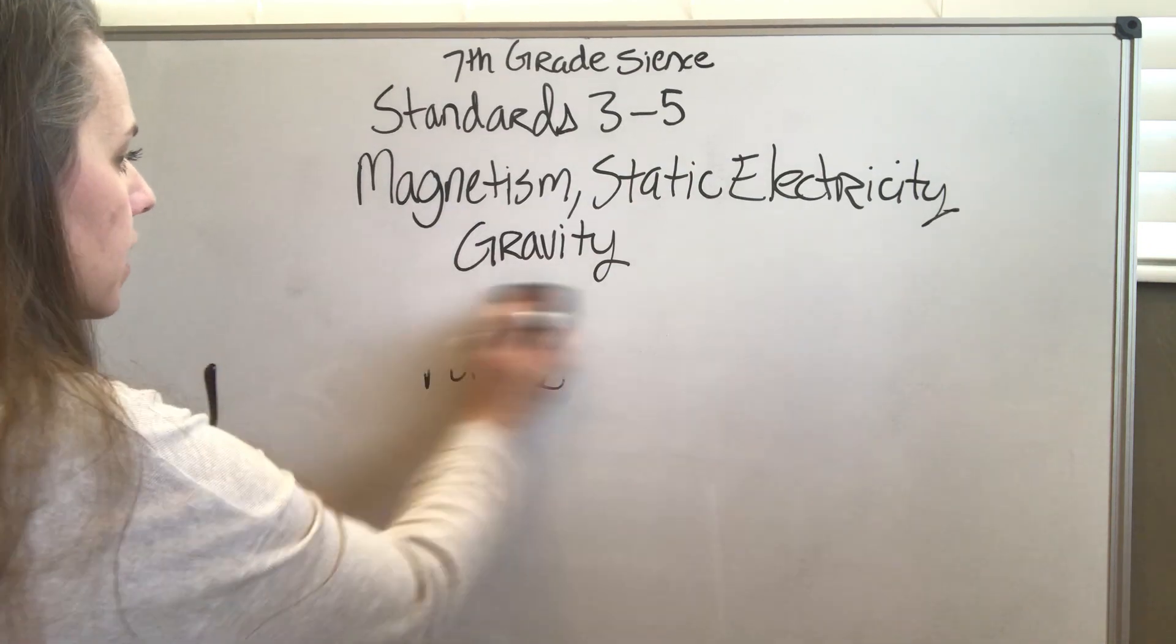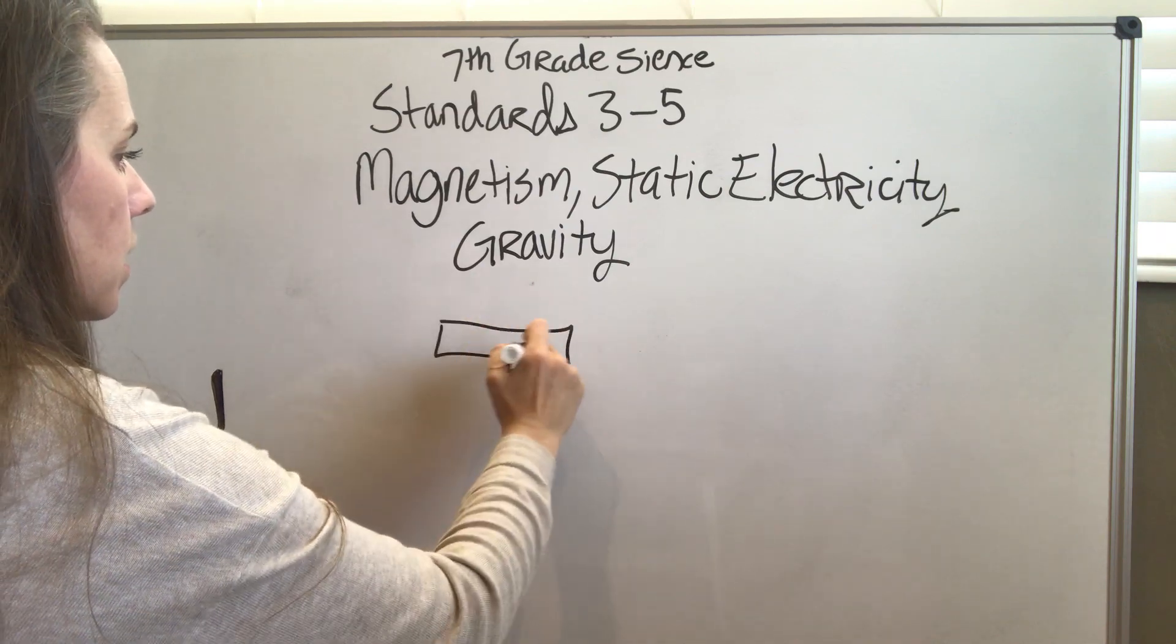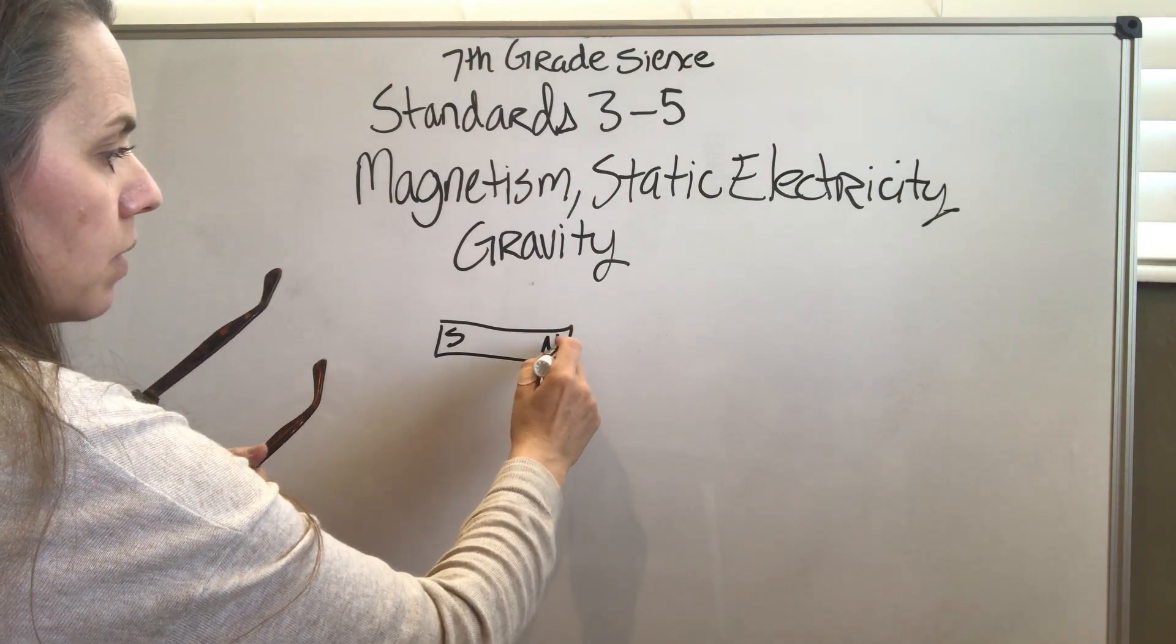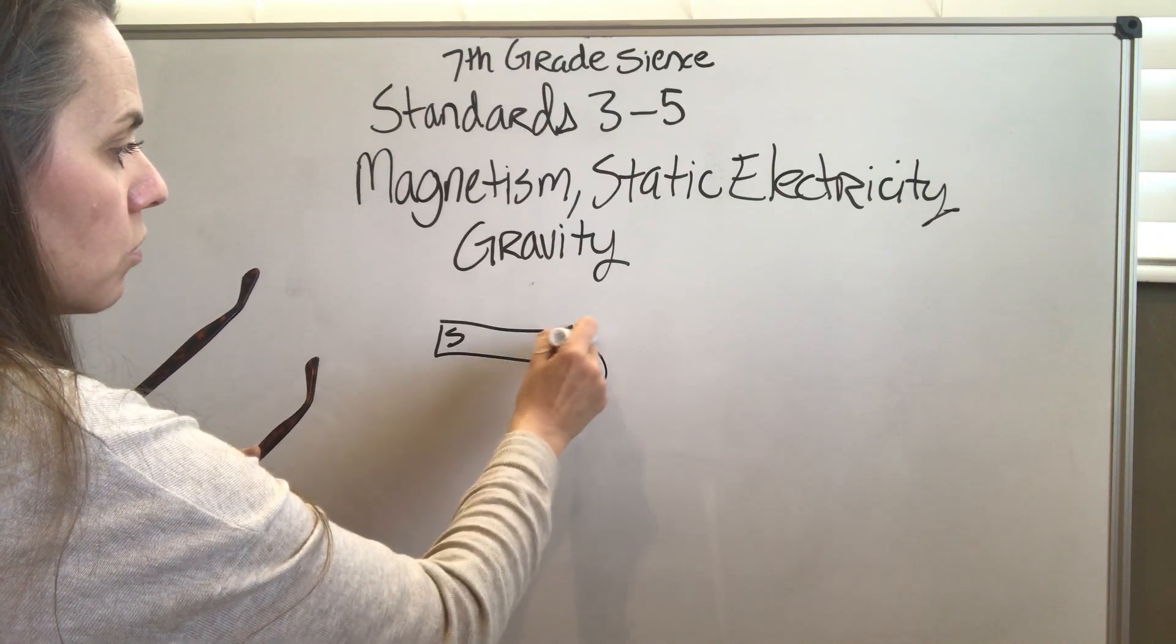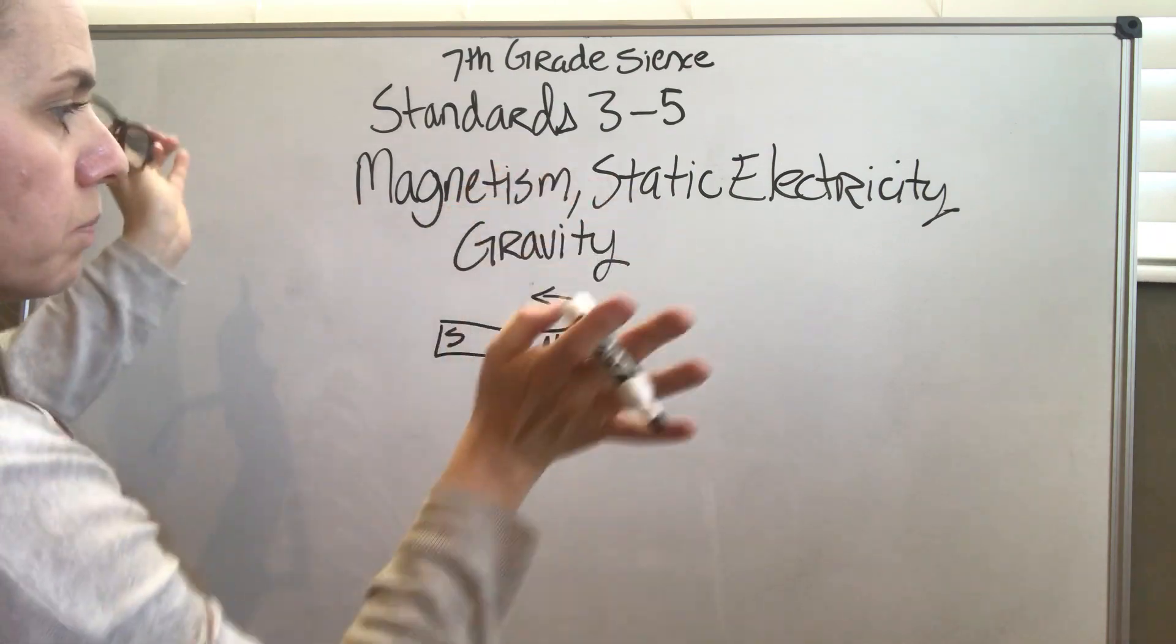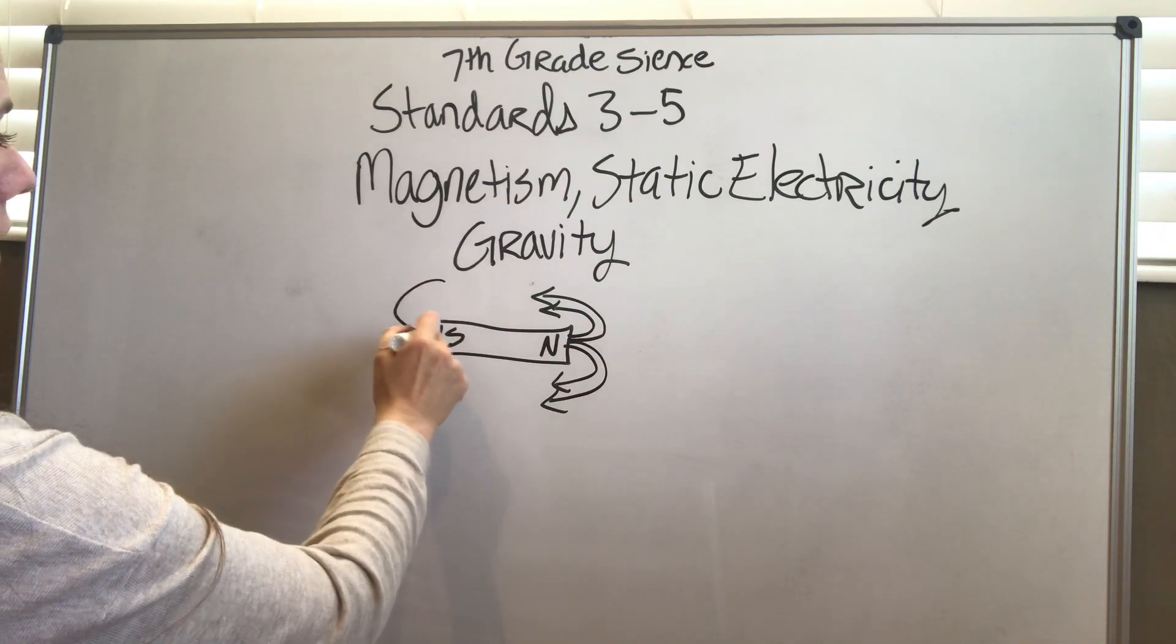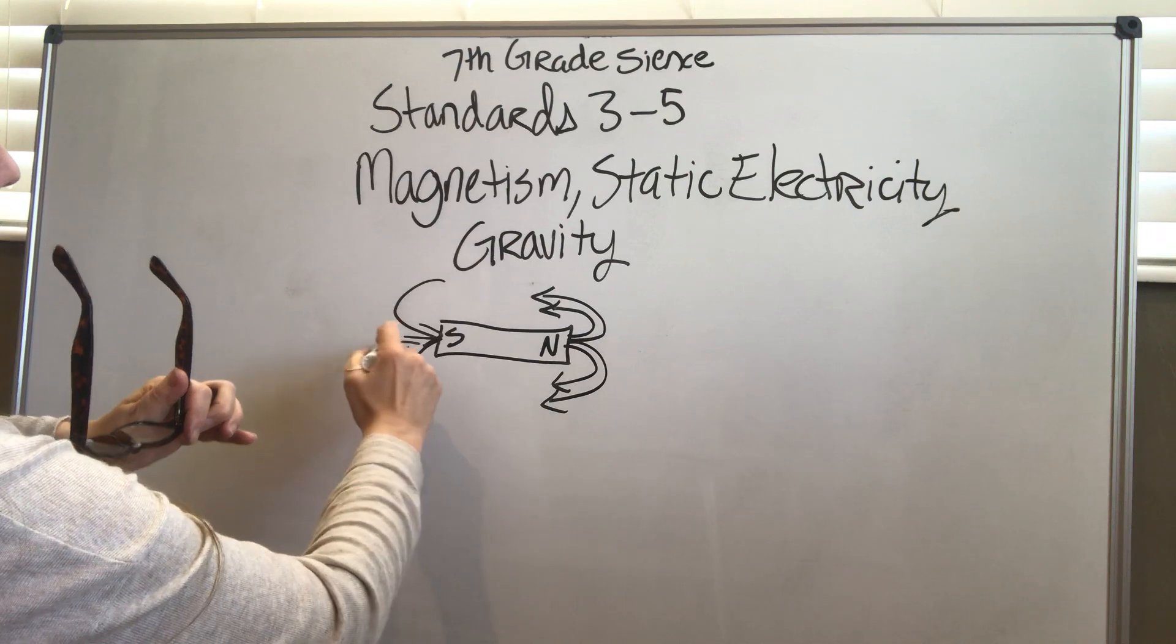For example, magnets have a north side and a south side, and these have the property of attraction. These are called the magnetic fields. The north side's magnetic field pushes outward, and then the south side's magnetic field travels inward - that's the direction of the attraction.